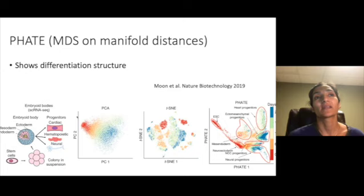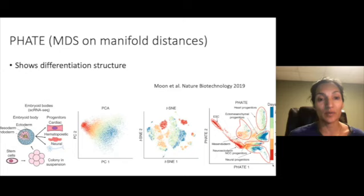Whereas FATE, which actually uses MDS after computing a manifold distance on this data, actually preserved this branching structure pretty well. So MDS will preserve whatever notion of distance you give it. And this can be one of the true advantages of MDS.